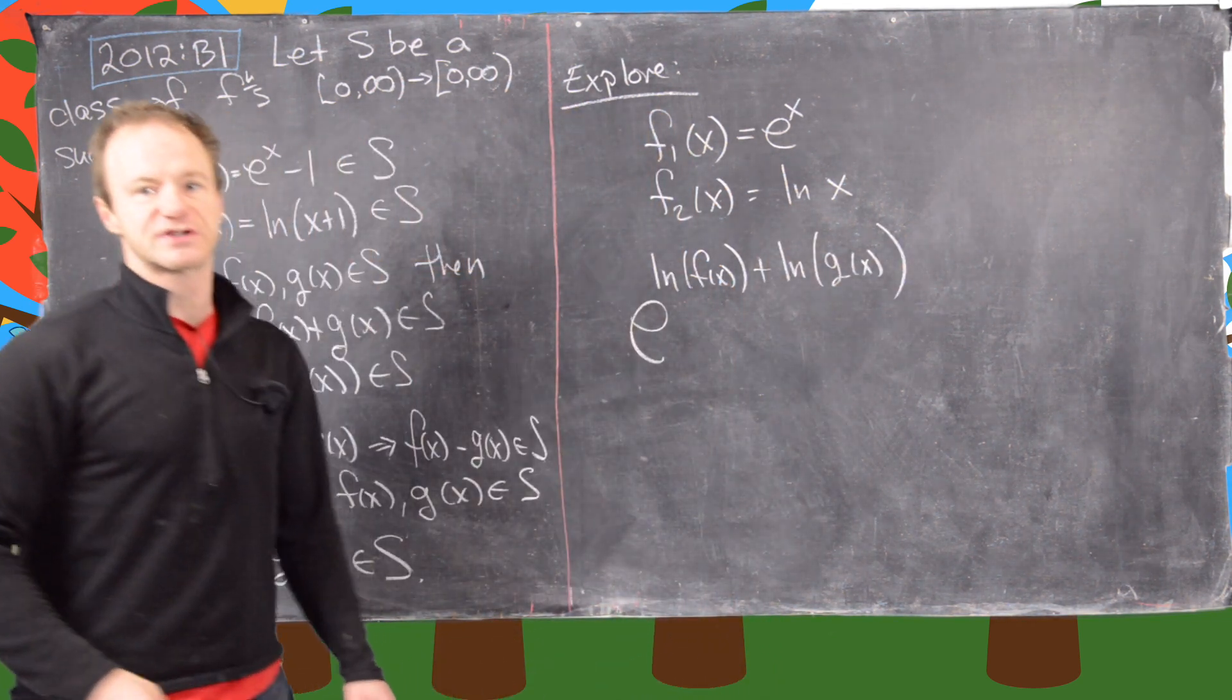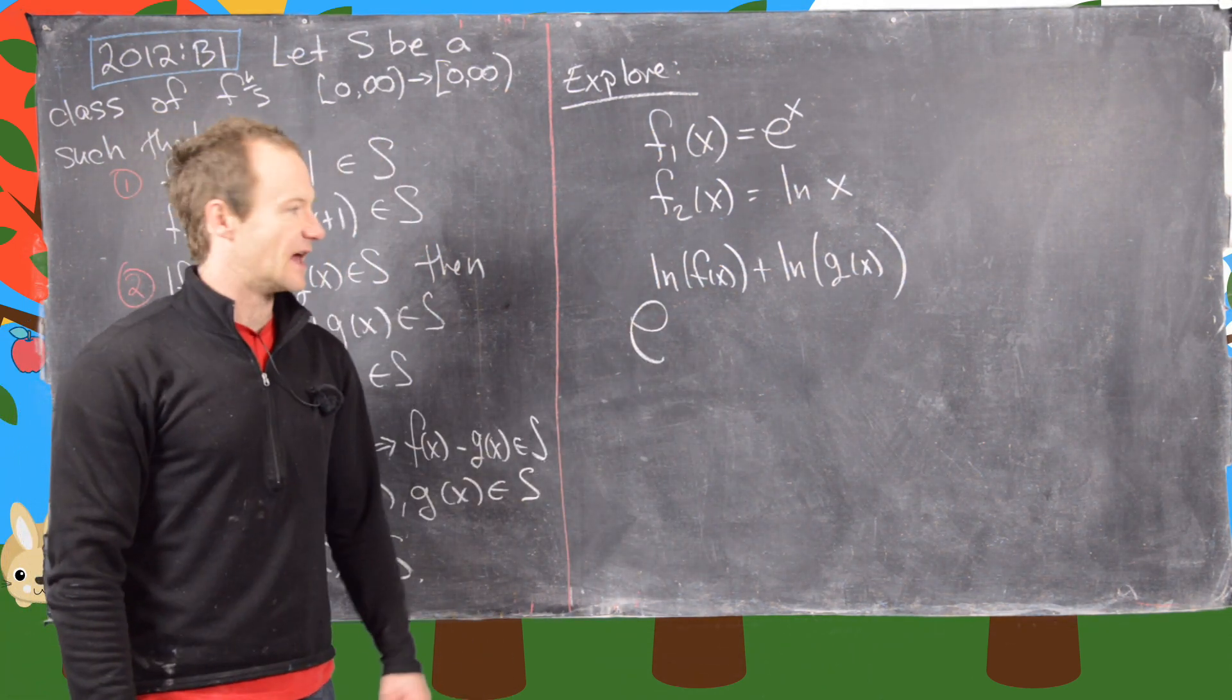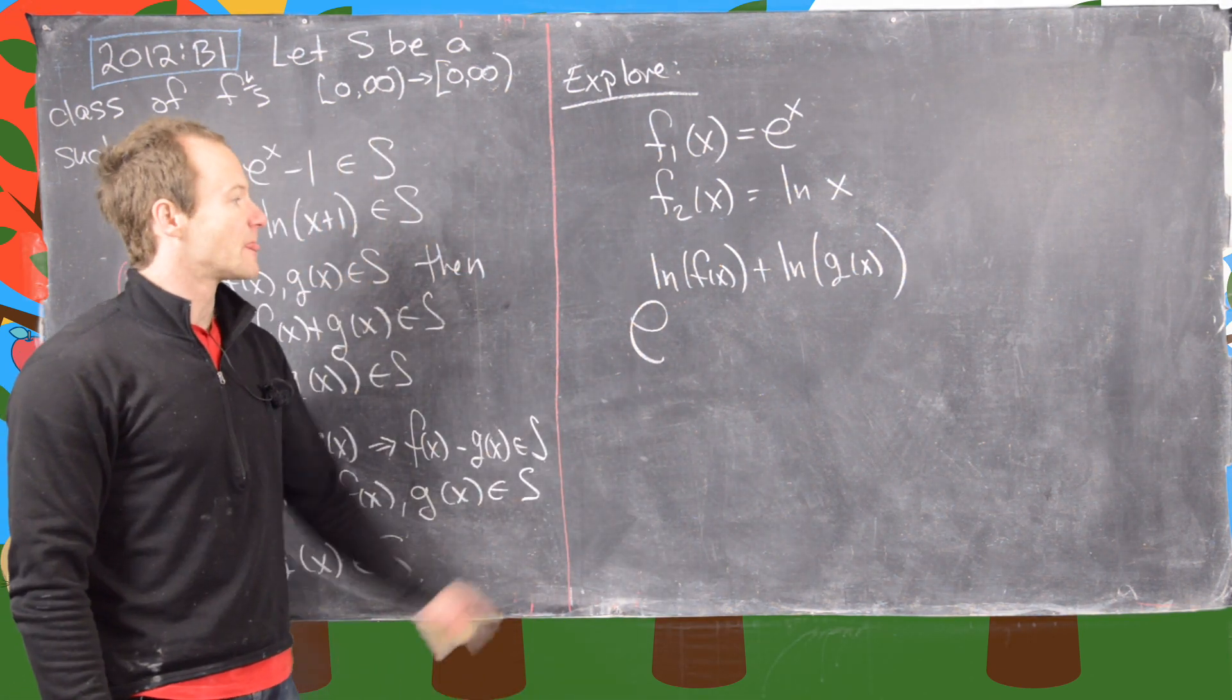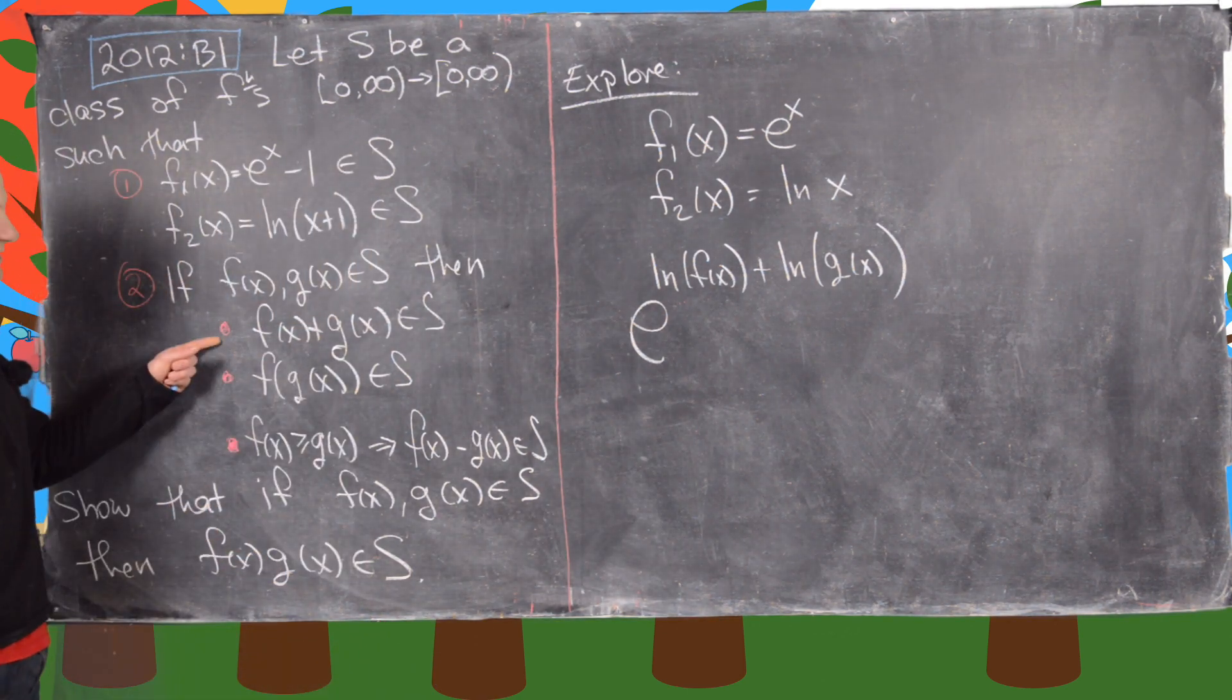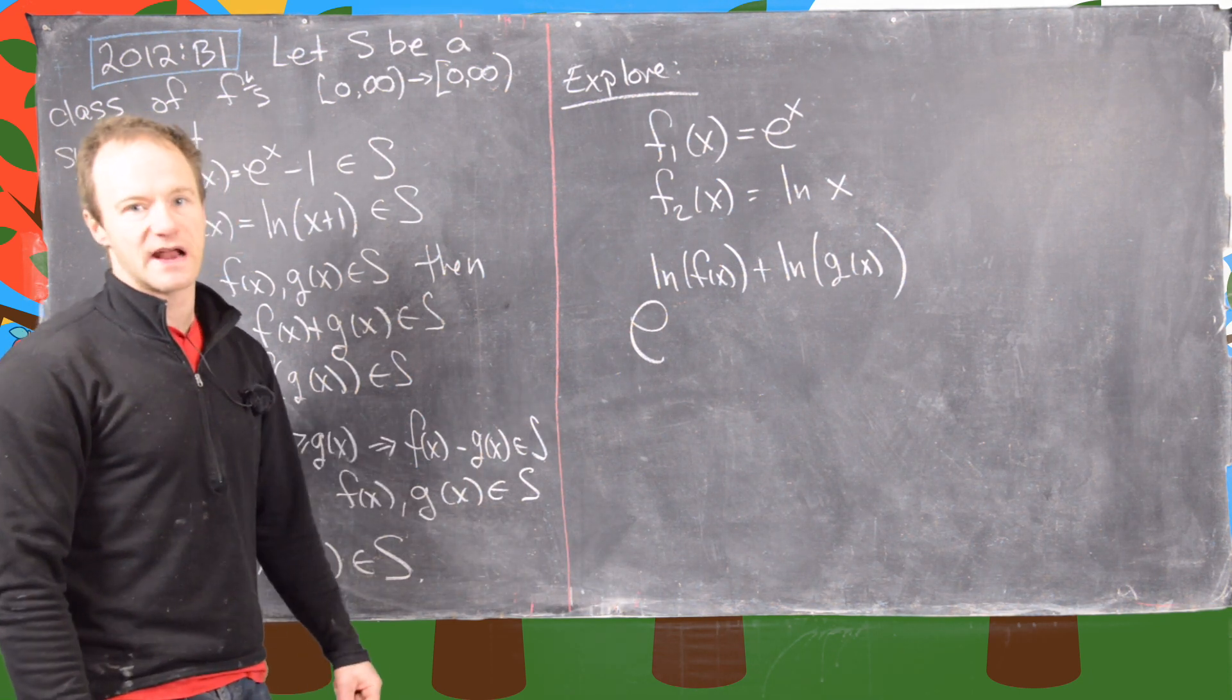So notice if we started off with f and g in S, then the natural log of f of x is in S, the natural log of g of x is in S also, but then their sum is in S by this rule right here, and then we compose that inside f1, and we get something in S.